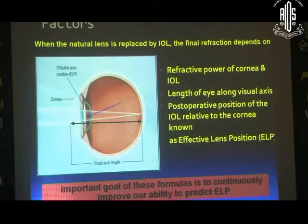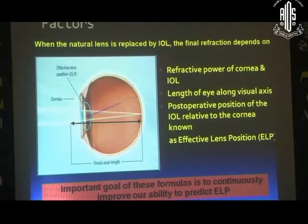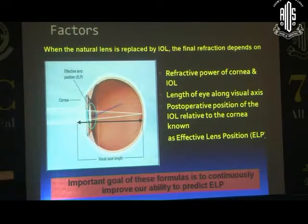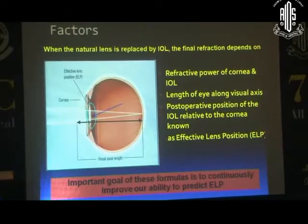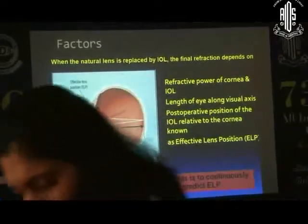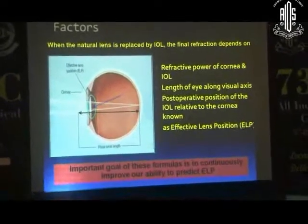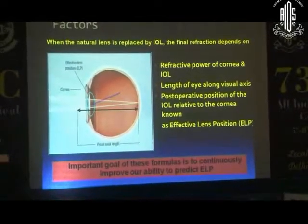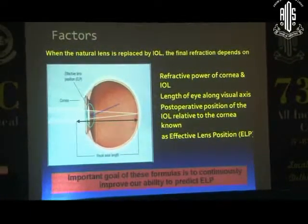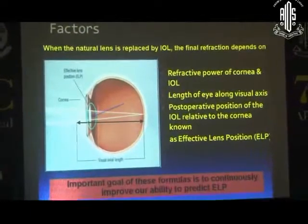When a natural lens is replaced by an IOL, the final refraction depends upon the refractive power of the cornea and IOL, the length of the eye along the visual axis, and the post-operative position of the IOL relative to the cornea — known as ELP, effective lens position. The important goal of these formulas is to continuously improve our ability to predict this ELP.